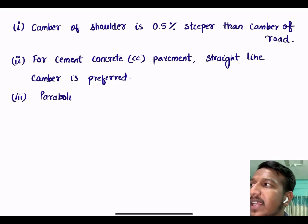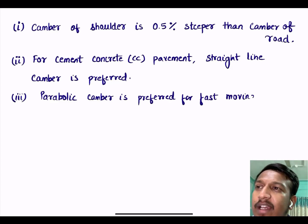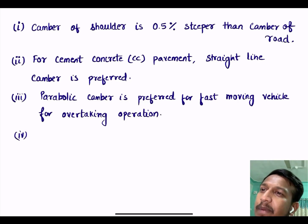Third is parabolic or elliptical camber are preferred for fast moving vehicle for overtaking operation. So need to remember three things: camber of shoulder is 0.5% steeper than camber of road, for CC pavement straight line camber, and parabolic camber for fast moving vehicle for overtaking operation.